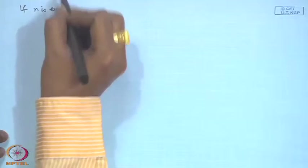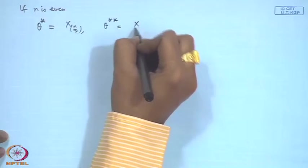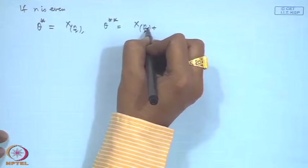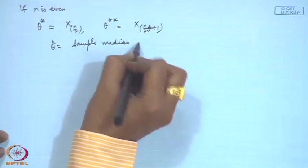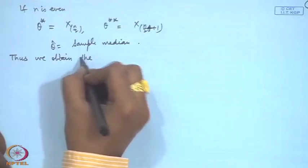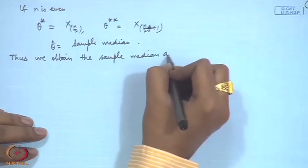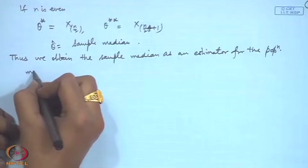Thus the general linear rank statistic and score functions are useful for deriving confidence intervals, point estimates, and testing equality of medians in bivariate problems. These are various applications of general linear rank statistics.